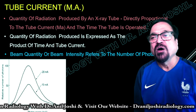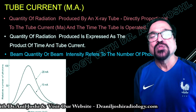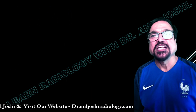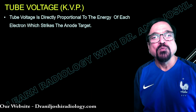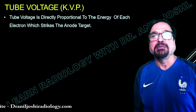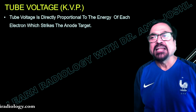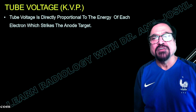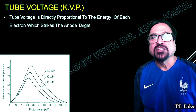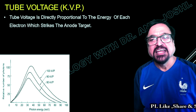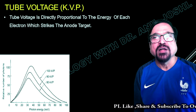Beam quality or beam intensity refers to the number of photons — these are two things to remember. Tube voltage is also called KVP. It is directly proportional to the energy of each electron which strikes the anode. This is usually called KV; KVP is correct but routinely we just call it KV.